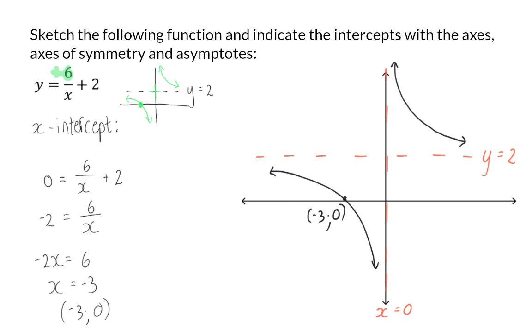Always ensure that you indicate at least one coordinate on each part of the hyperbola. Now I'm going to choose a positive x-value to substitute to get a coordinate on my top half. When I substitute 1 into the equation, the y-value is 8. Lastly, we need to indicate the axes of symmetry. Remember that these two lines intersect on the intersection of the two asymptotes. The first axis of symmetry will be the one with a positive gradient of 1 plus the q-value, and the second axis of symmetry will have a negative gradient of minus 1 plus the q-value.